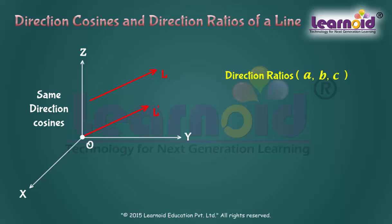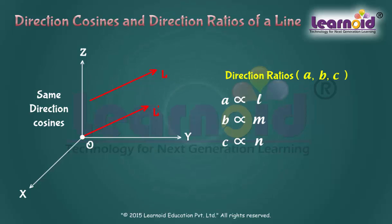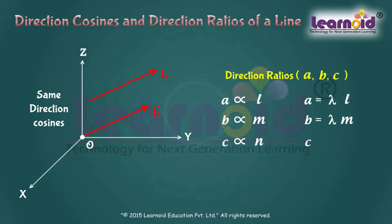Any three numbers proportional to the Direction Cosines of a line are called the Direction Ratios of the line: A is equal to Lambda L, B is equal to Lambda M, C is equal to Lambda N, for any non-zero constant Lambda belonging to R.